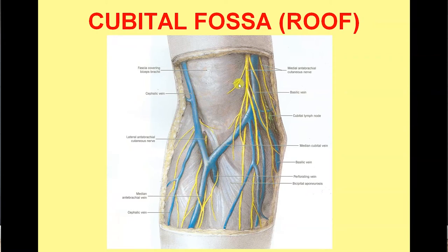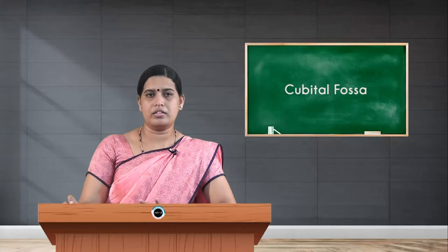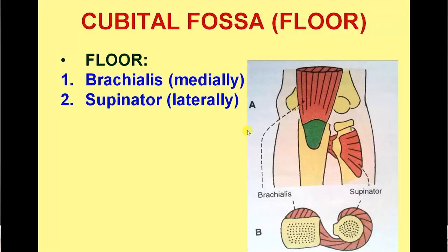In the picture you can see the cephalic vein laterally and basilic vein medially, connected by the median cubital vein. You can also appreciate the medial cutaneous nerve of the forearm, lateral cutaneous nerve of the forearm, and the bicipital aponeurosis — an expansion from the tendon of biceps brachii passing medially and inserting to the posterior subcutaneous border of the ulna. These are all the roof relations of the cubital fossa.